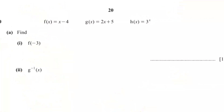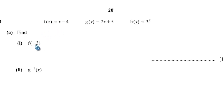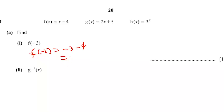Next is question 10 from paper 0580/41, May-June 2023. f(x) equals x minus 4, g(x) equals 2x plus 5, h(x) equals 3 to the power of x. Find f(negative 3): substitute negative 3 into f(x), giving negative 3 minus 4, which equals negative 7.